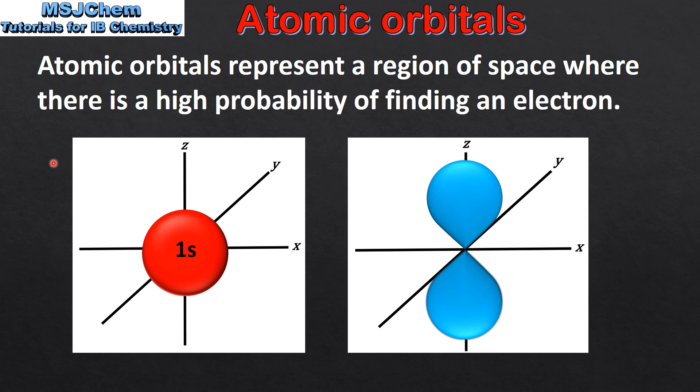However, there's a high probability of finding an electron within an atomic orbital. The two kinds of atomic orbitals we'll look at in this video are S-orbitals,